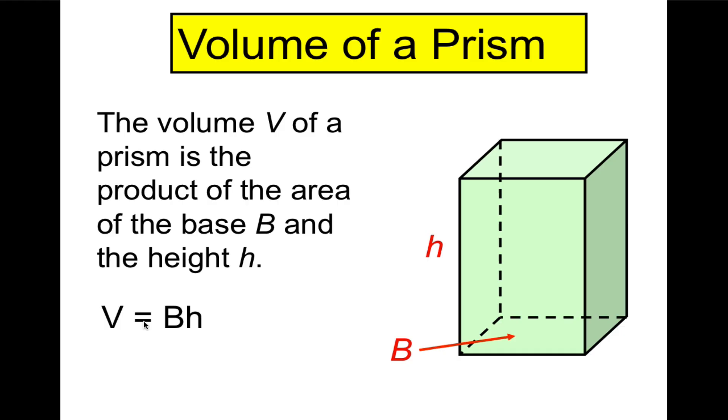The volume of a prism is the product of the area of the base and the height. Once again, the volume of a prism is the product of the area of the base times the height.